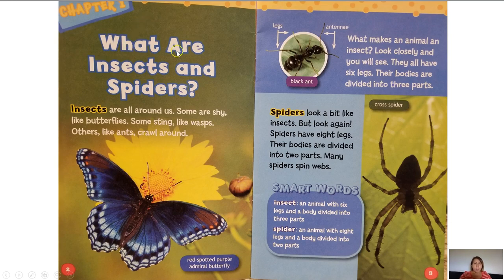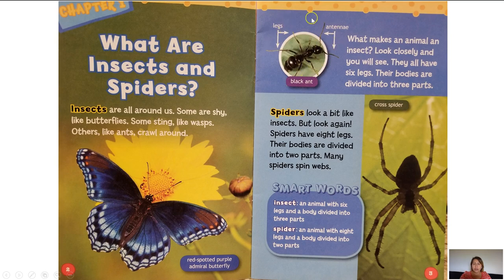Chapter 1: What are insects and spiders? Insects are all around us. Some are shy like butterflies, some sting like wasps, others like ants crawl around. This is a photograph of a red spotted purple admiral butterfly. And on page 3 we have a photograph with labels of a black ant, pointing to its legs and its antennas.